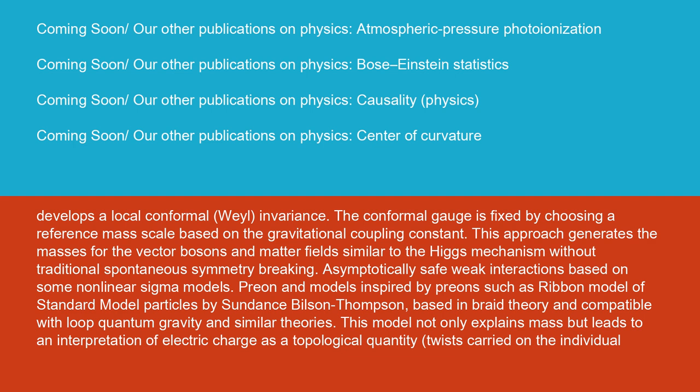The conformal gauge is fixed by choosing a reference mass scale based on the gravitational coupling constant. This approach generates the masses for the vector bosons and matter fields similar to the Higgs mechanism without traditional spontaneous symmetry breaking.